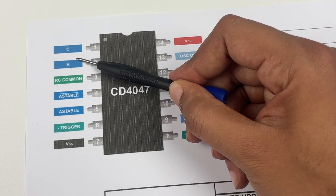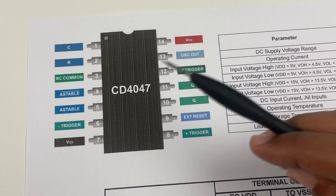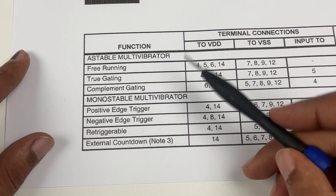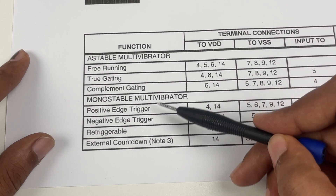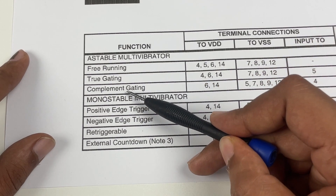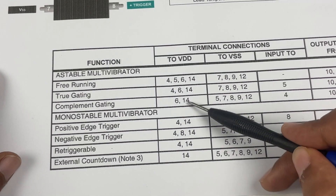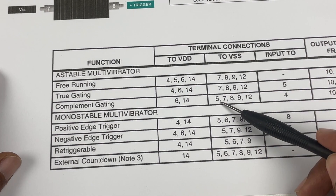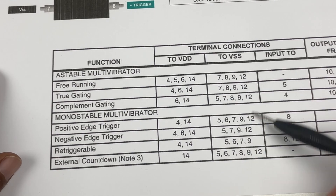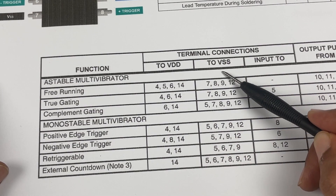All the other pins will most of the time be connected to VDD or VSS based on the mode in which you are operating. For example, if you want to run it as an astable multivibrator in complement gating mode, then you connect pins 6 and 14 to VDD, and pins 5, 7, 8, 9, and 12 to VSS.